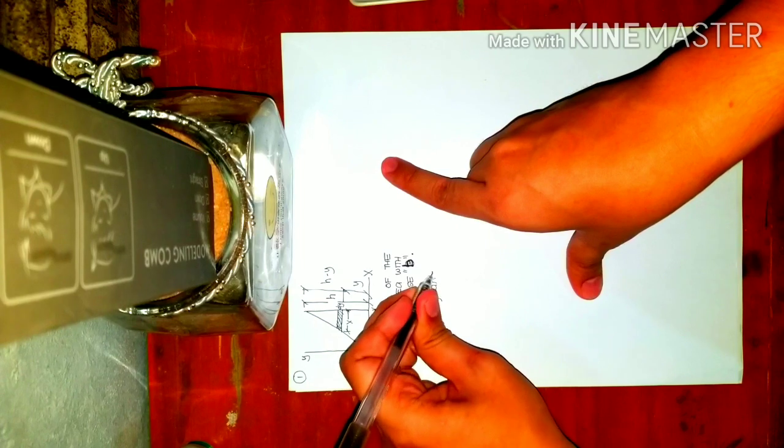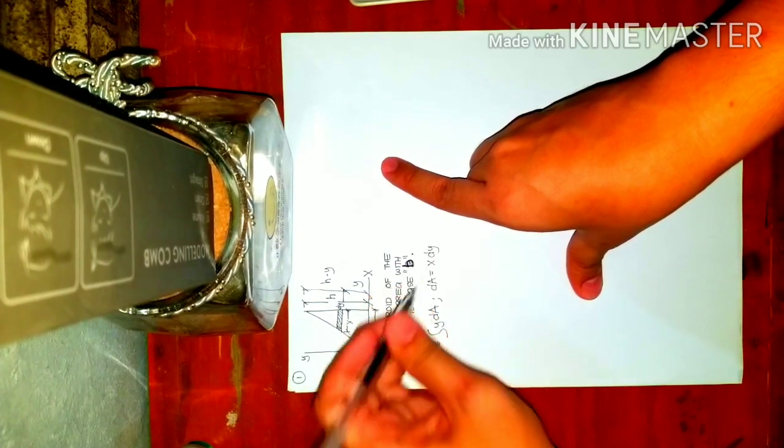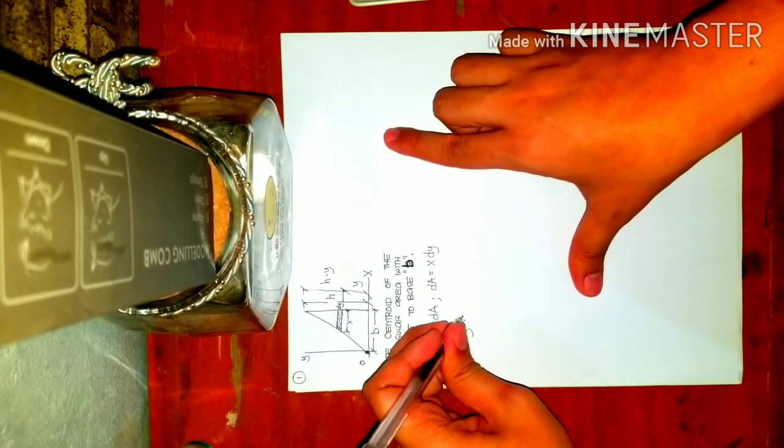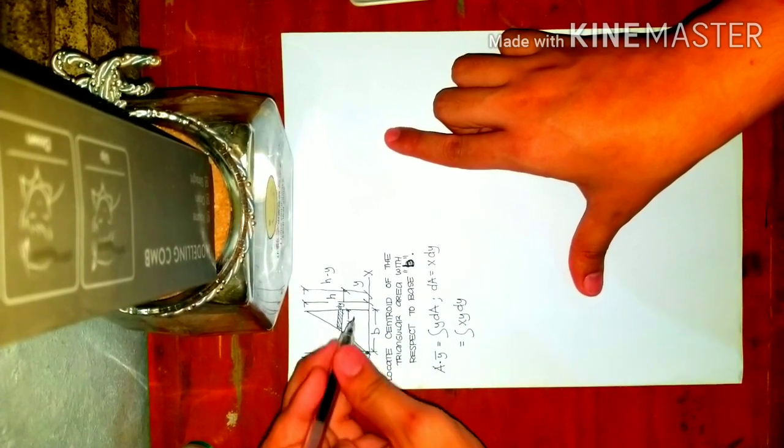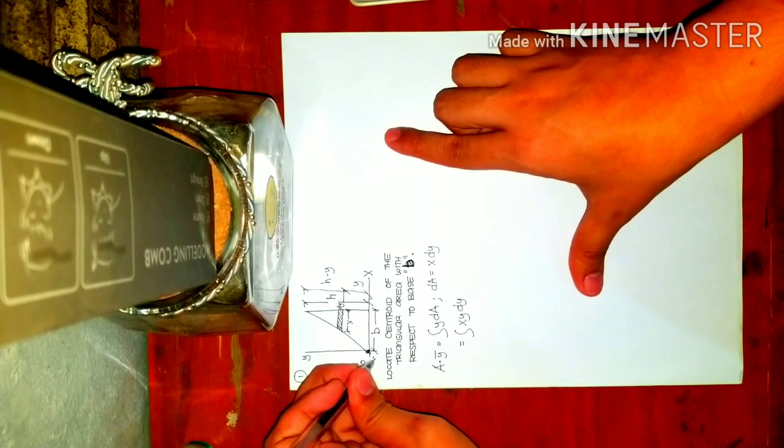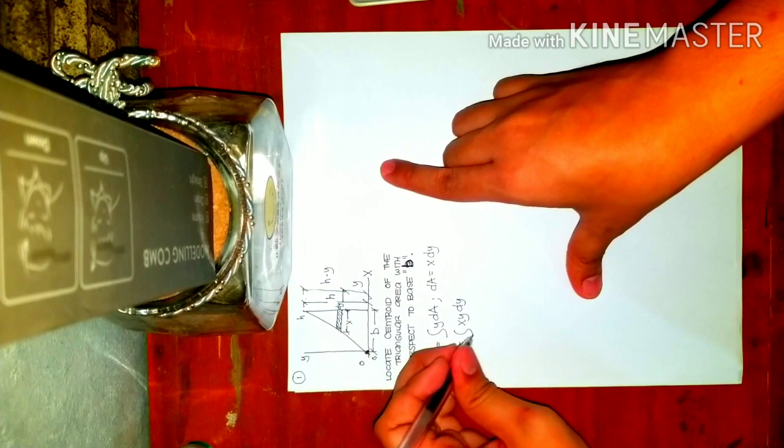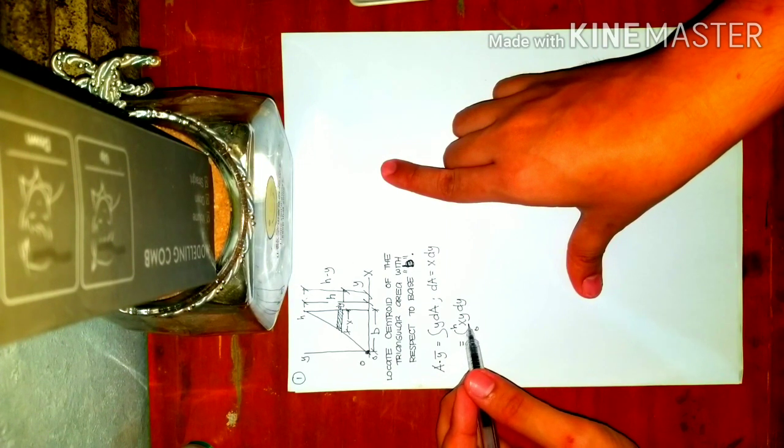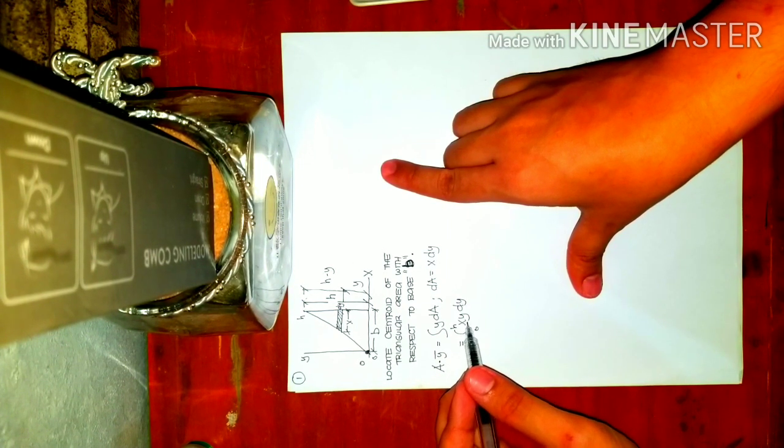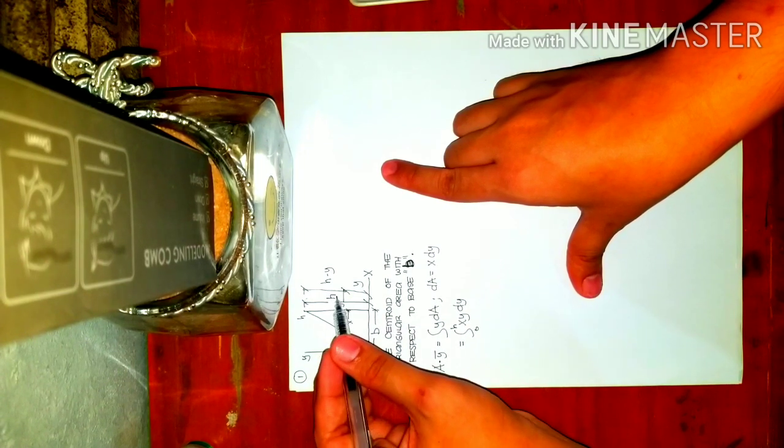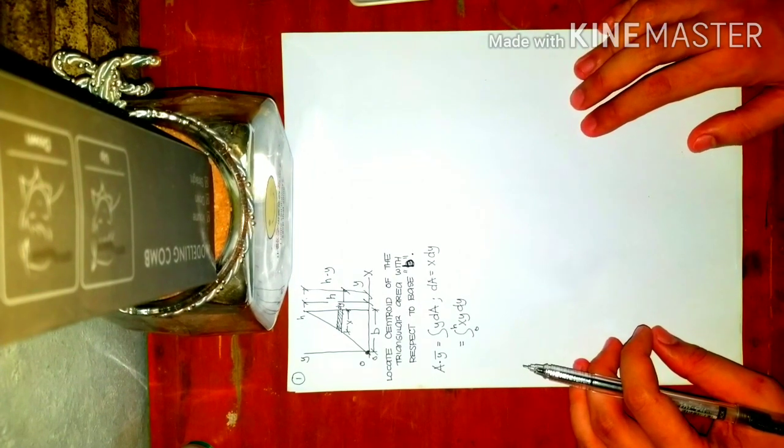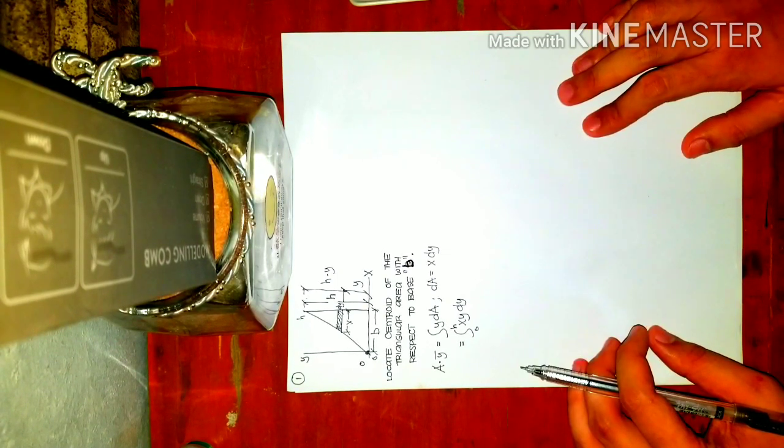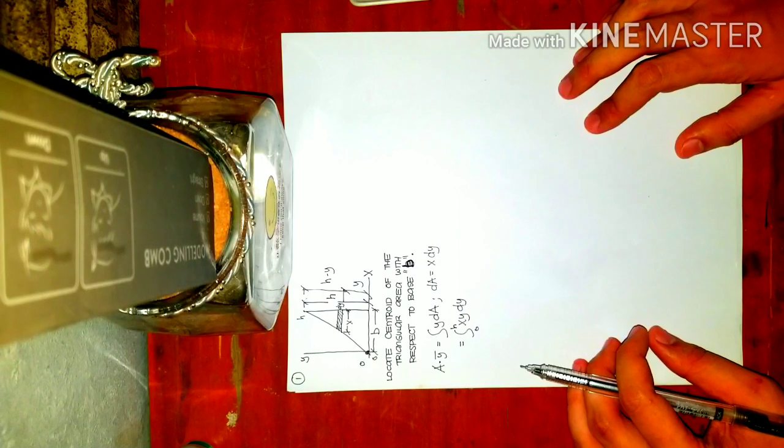From the figure, dA equals x multiplied by dy. So the equation becomes the integral of xy dy, with limits from 0 to h. Notice we have a variable x here, so we need to relate x in terms of h and y. How do we do that? By using similar triangle principle or ratio and proportion.